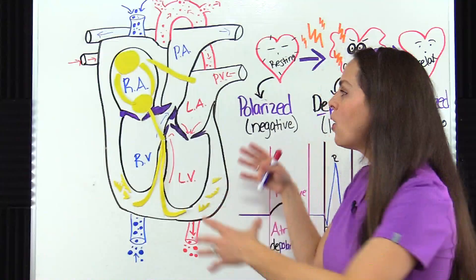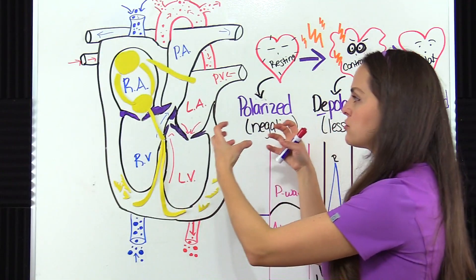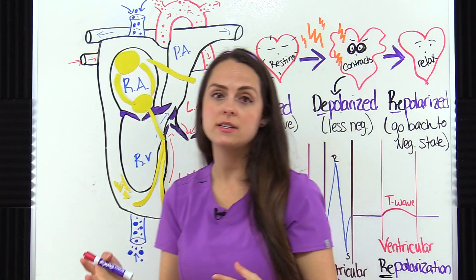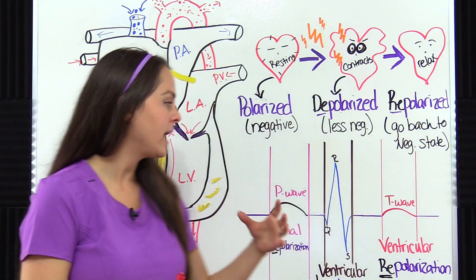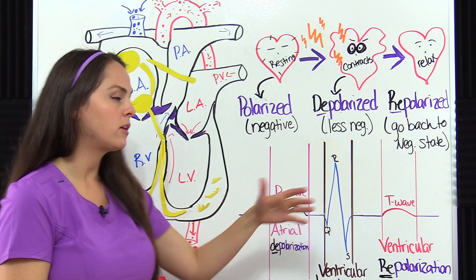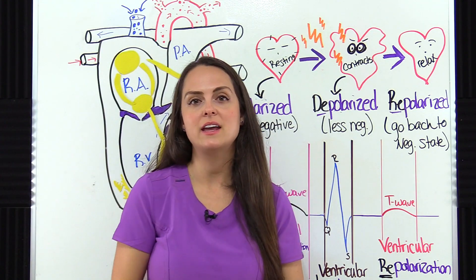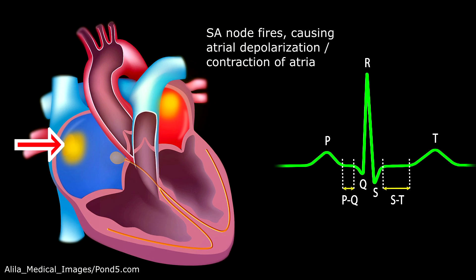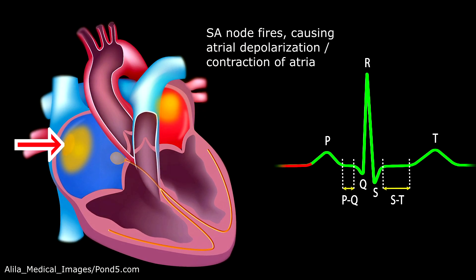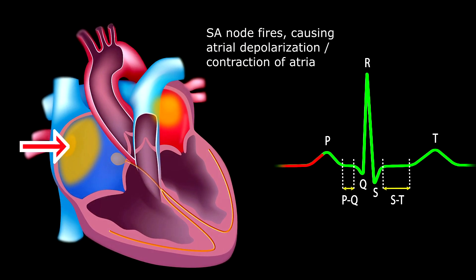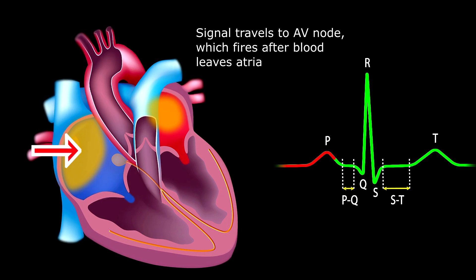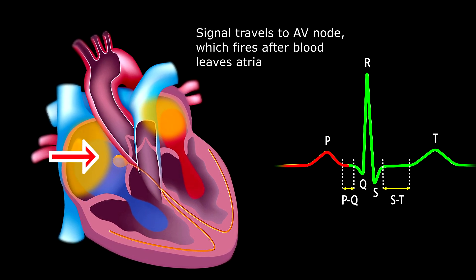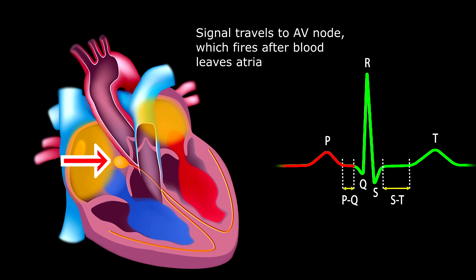So now let's see the heart in action — how it actually contracts and relaxes whenever it is stimulated by this electrical conduction system, creating this PQRST complex, by looking at this animation. First, the SA node fires and this causes atrial depolarization, which causes the atria to contract. Then the signal goes down to the AV node. Notice the AV node does not fire until those atria are empty and the blood is in the ventricle.